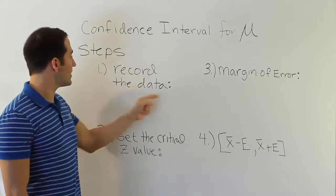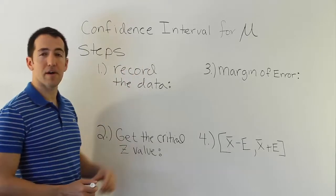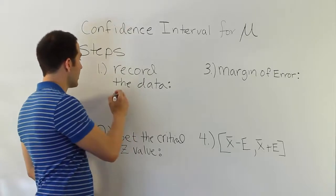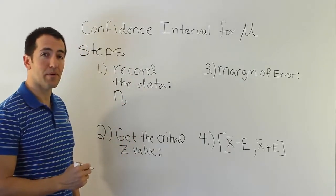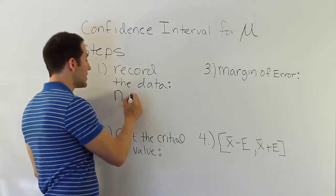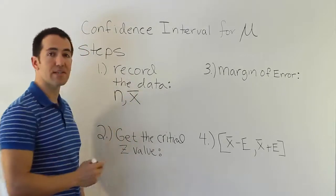Step one: you're going to record the data that's given in the problem. All problems that we're going to work with that involve the confidence interval for the mean will give us a sample size n. We're going to need that number for the problem. We will also need a sample mean x-bar. That will be something they calculated from that sample size of n.